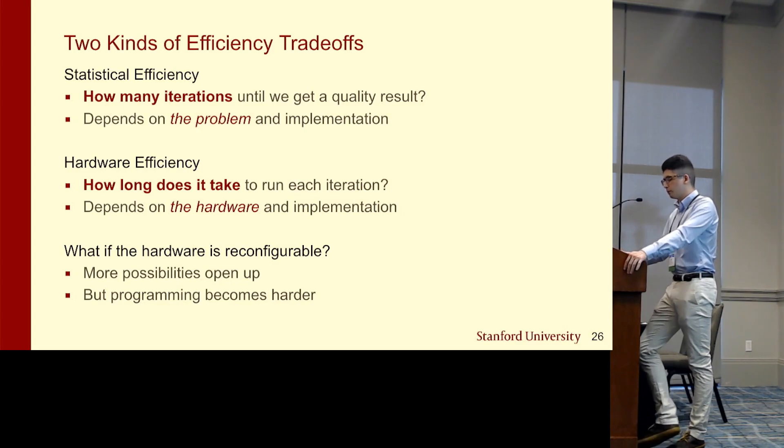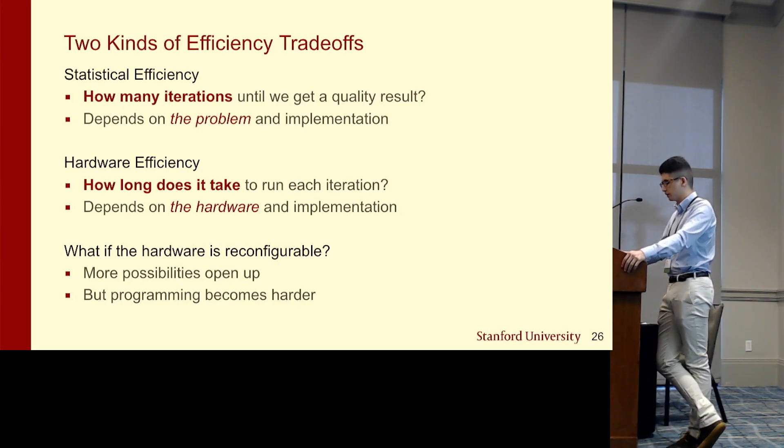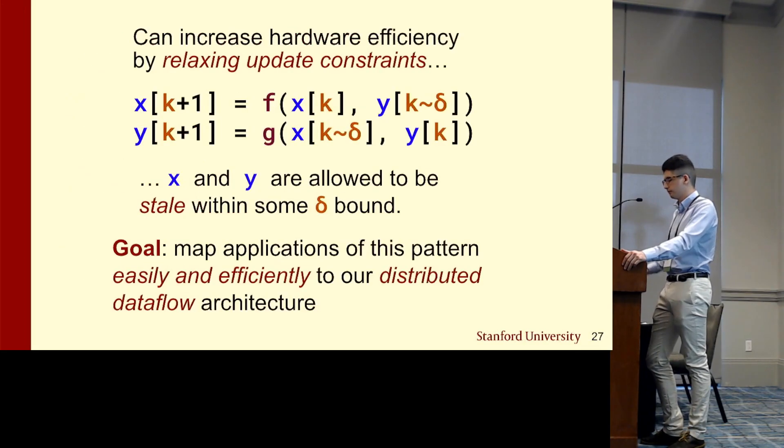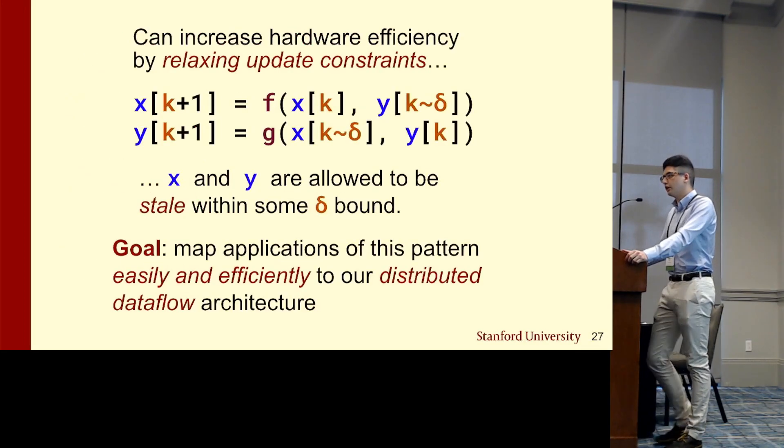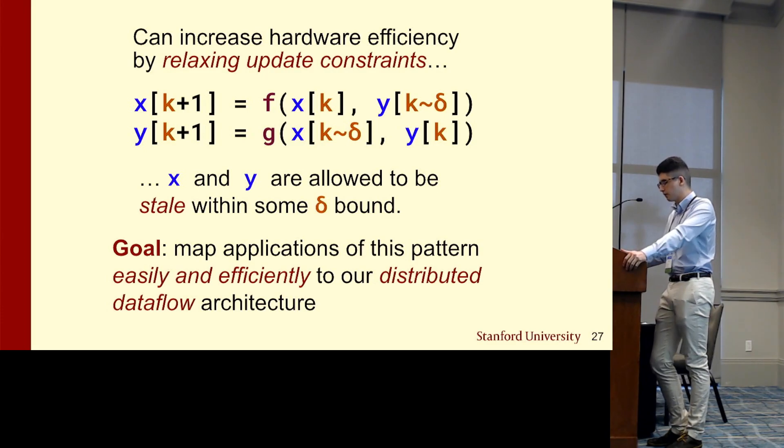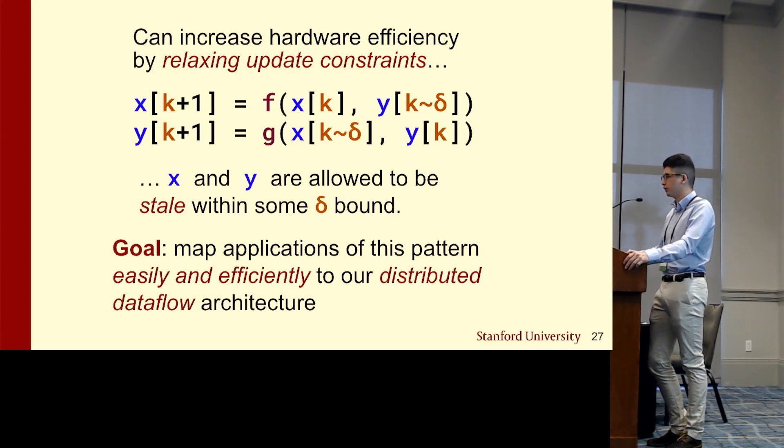There's a tradeoff to be made between the two to maximize end-to-end performance. But this tradeoff is harder to make when the hardware itself is reconfigurable, which opens up a lot more possibilities. In this case, to increase hardware efficiency, we can reduce synchronization by allowing x and y to run ahead without communicating updates until some desired bound is reached to ensure that we don't sacrifice too much on the statistical efficiency side. In this case, that bound is delta.